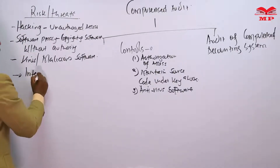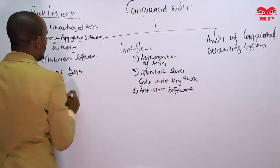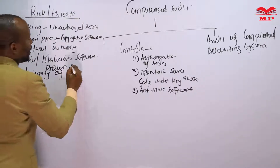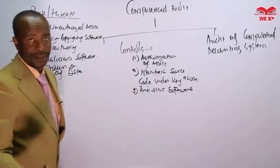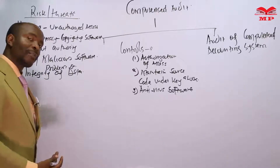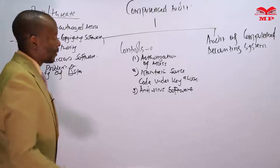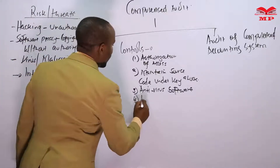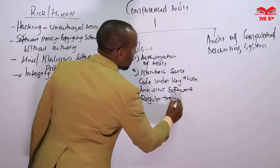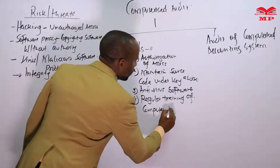There is also a problem with the integrity of data. If you are doing management information systems, you know that when we talk about integrity of data, it means the data is not complete or not accurate — either because the user does not understand the system or lacks the necessary competence. The control for this is regular training of computer users.